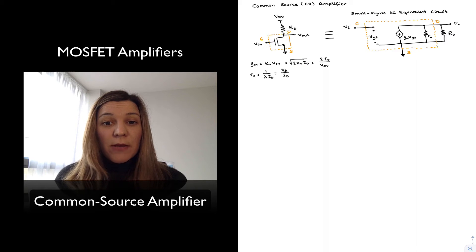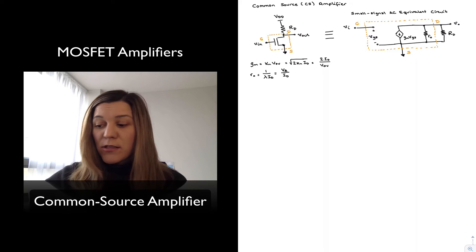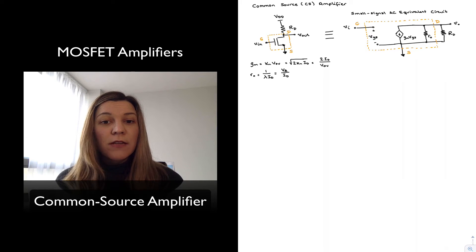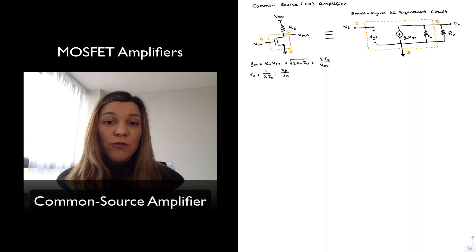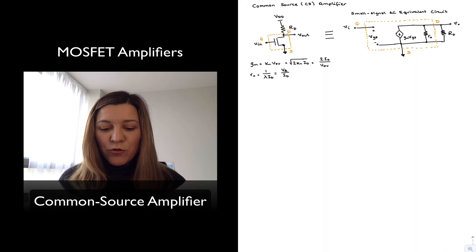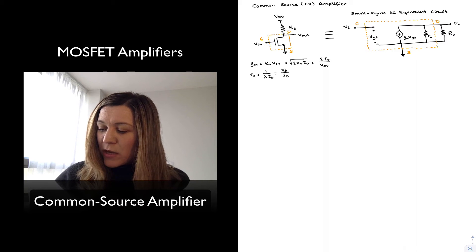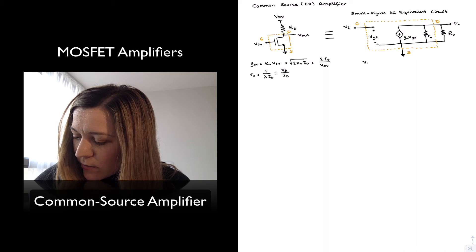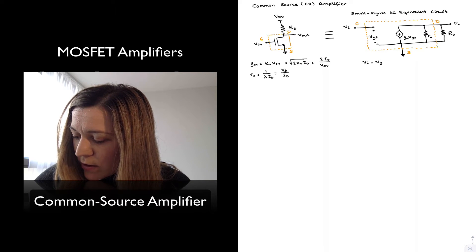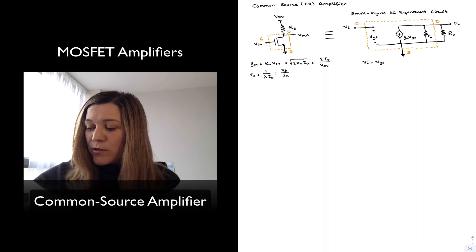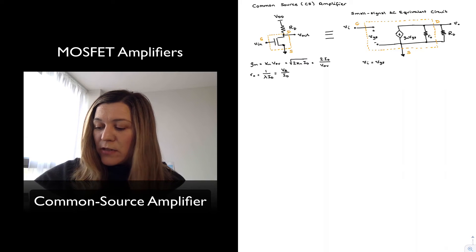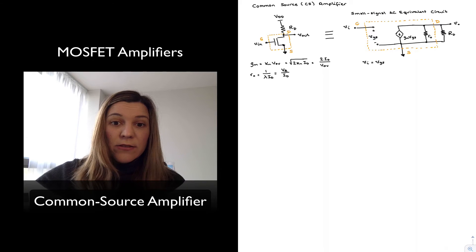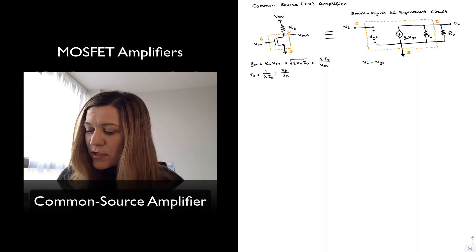And so, first of all, let's come up with an expression for the small signal voltage gain by analyzing the small signal equivalent circuit. And again, voltage gain is an expression of the ratio of output voltage over input voltage. That's what I'm trying to come up with. So, first thing I notice is that my input voltage is equal to my VGS voltage, and that's just because of the connections there. The source is tied to ground, and VIN is the voltage that appears at the gate.